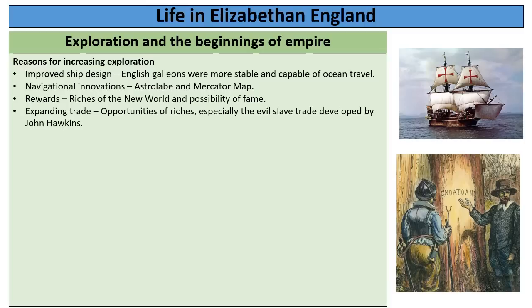People were also enticed into exploration by rewards. The New World, the Americas, was filled with new crops to sell like potatoes and tobacco, and there were rumours of cities filled with gold — El Dorado. People travelled across the oceans to get rich and famous, like their heroes Drake and Walter Raleigh. Finally, varying and expanding trade — the most notorious and awful but lucrative of which is the slave trade, developed by John Hawkins and Sir Francis Drake in the 1560s. The opportunities to get wealthy from trade such as these, unfortunately, were enticing for many.